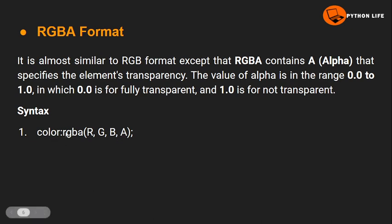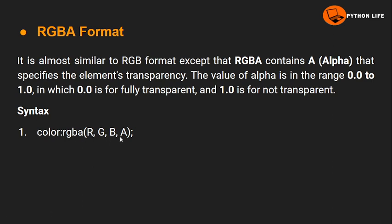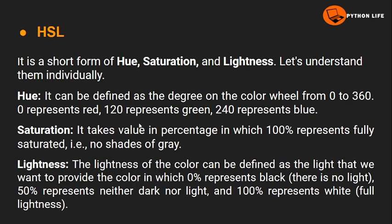The syntax for RGBA is: color: rgba(R, G, B, A). Here we have red, green, blue, and the extra alpha parameter. The RGB values range from 0 to 255 and the alpha transparency ranges from 0.0 to 1.0. This is the RGBA format.